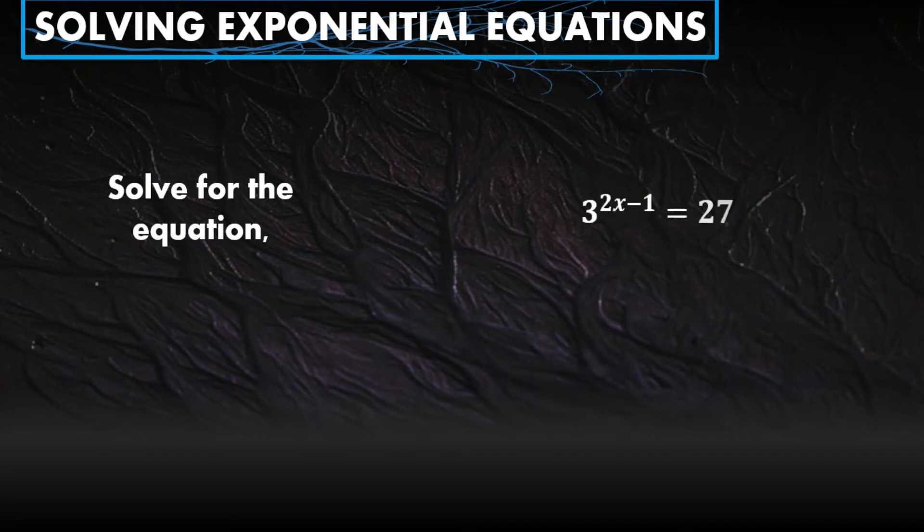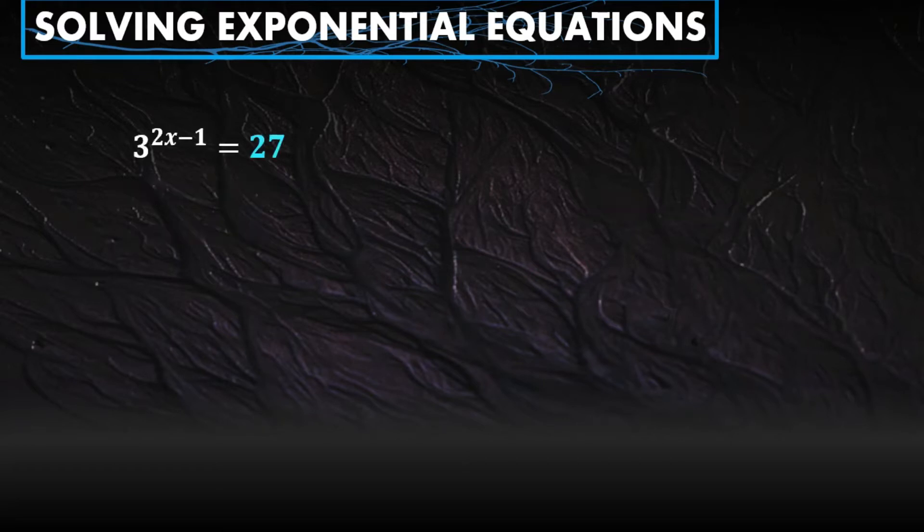For example, let's solve this equation. Look at the given. We have different bases here—one is 3 and the other is 27. You might ask why 27 is called a base when it has no exponent. It does have an exponent, an invisible 1, so we don't need to write it. We take it as a base. So we have different bases: 3 and 27.